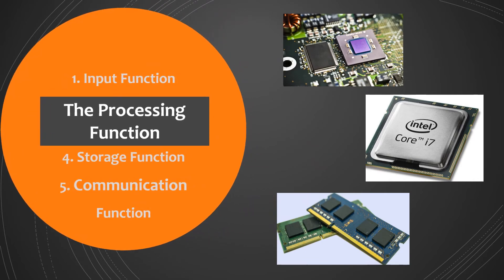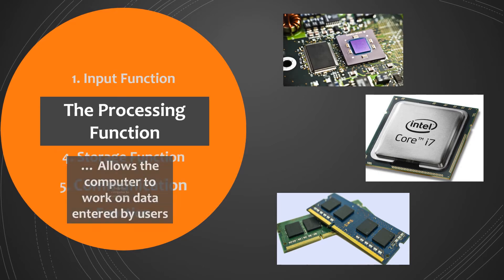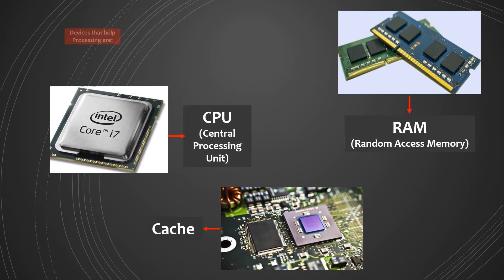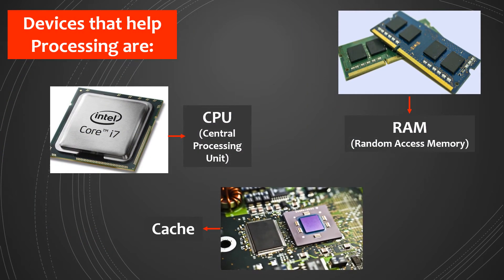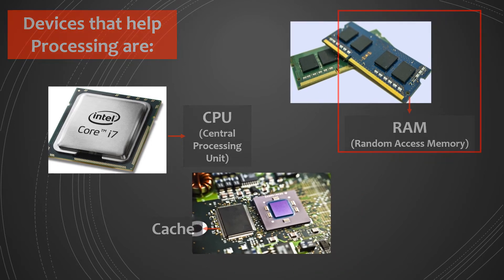The processing function. The processing function allows the computer to work on data entered by users. Some devices that help the computer to process data include the central processing unit or CPU, the cache memory, and the random access memory or RAM.